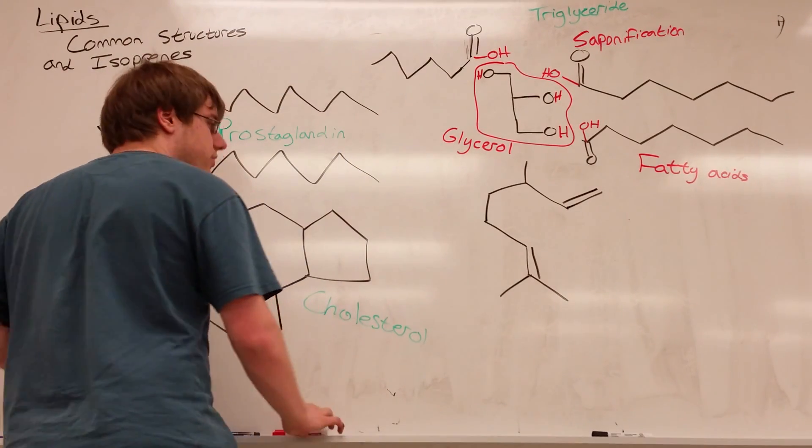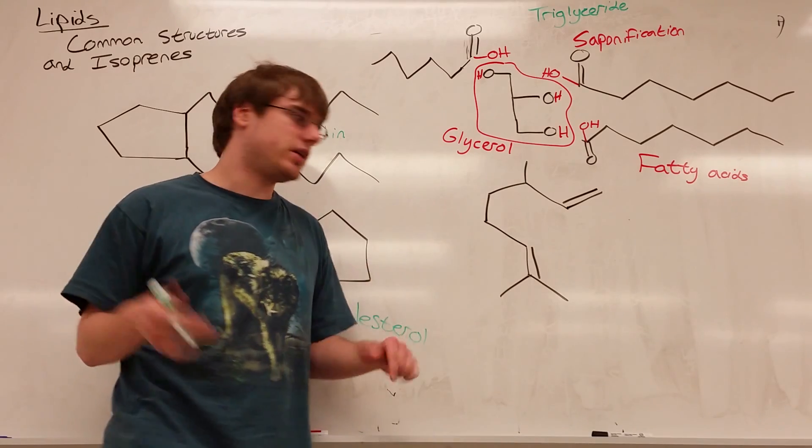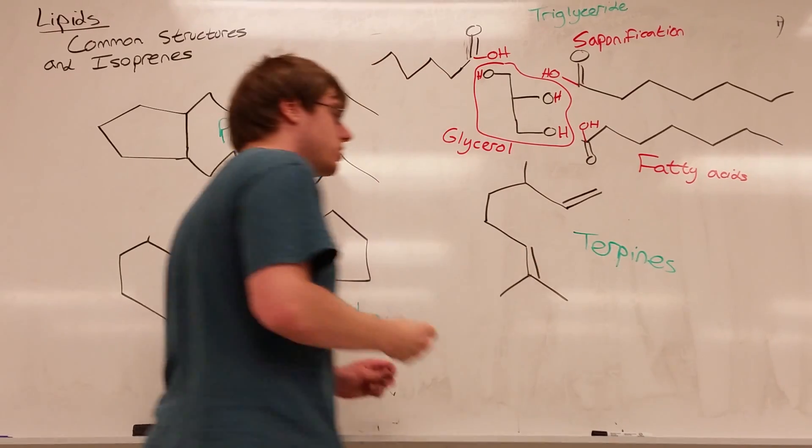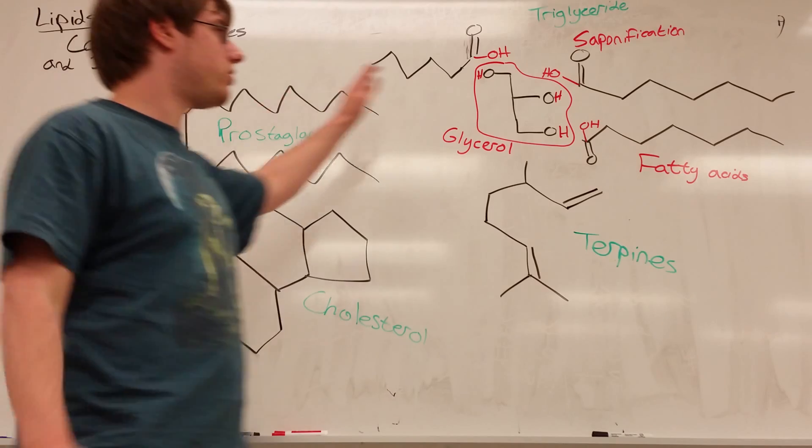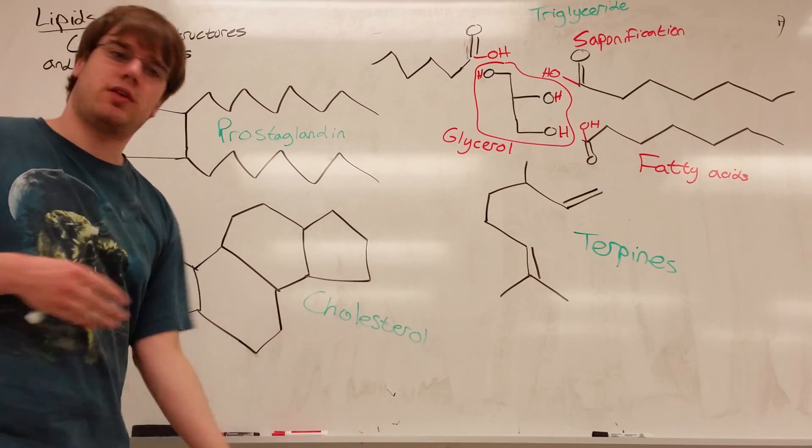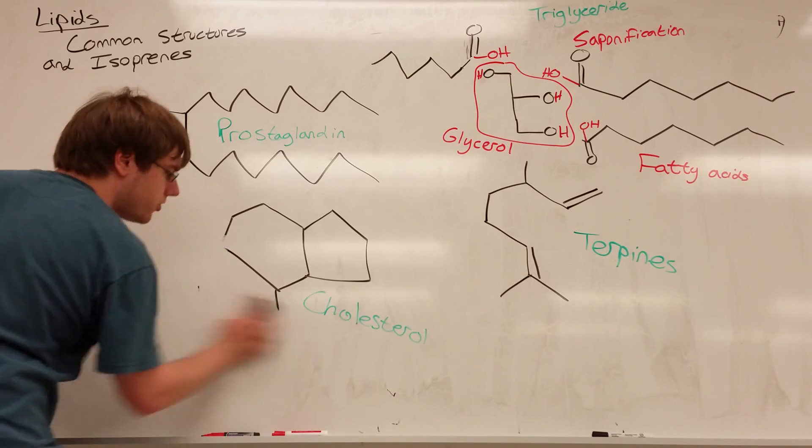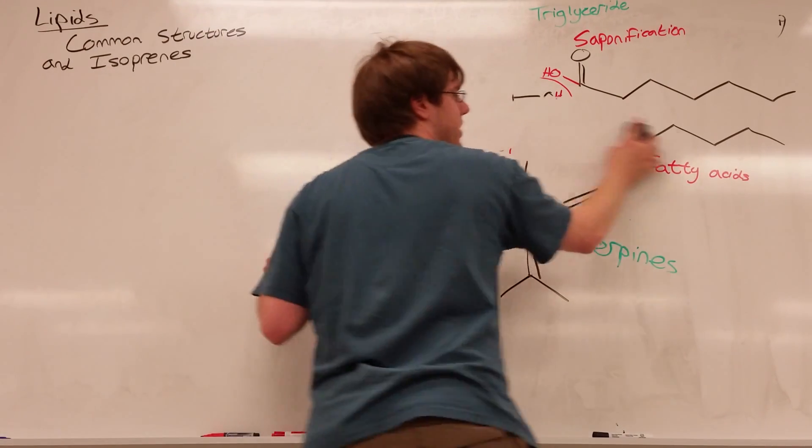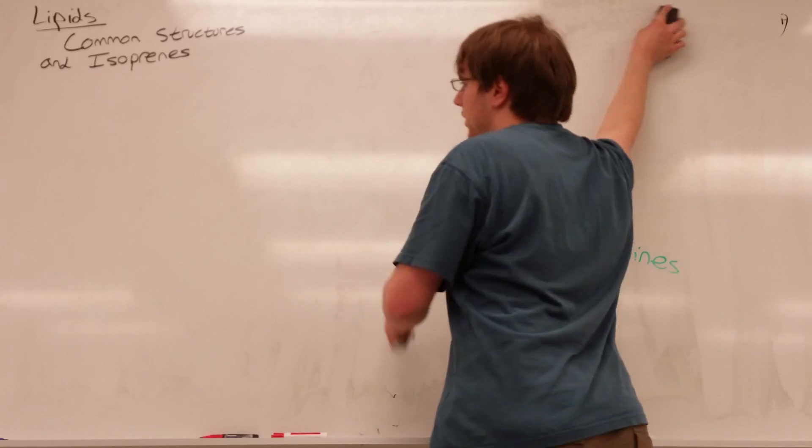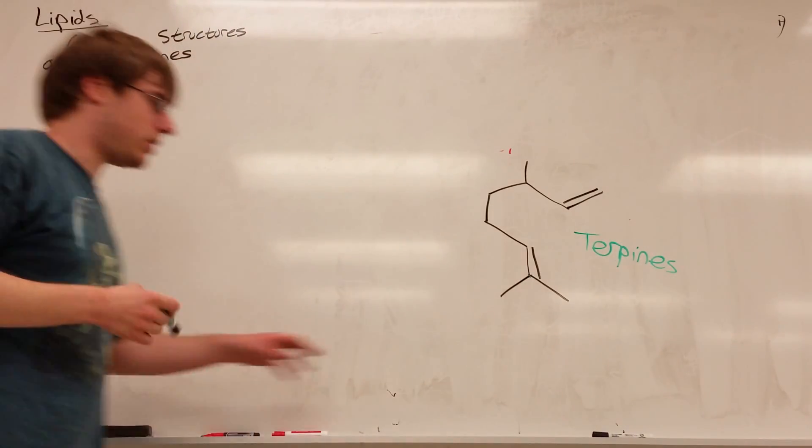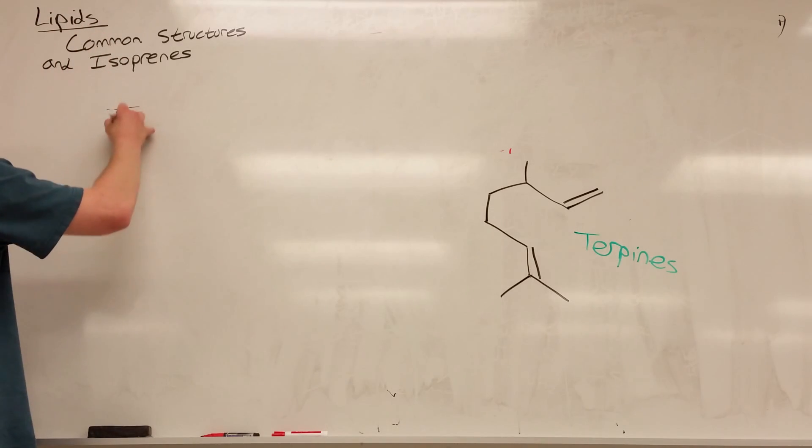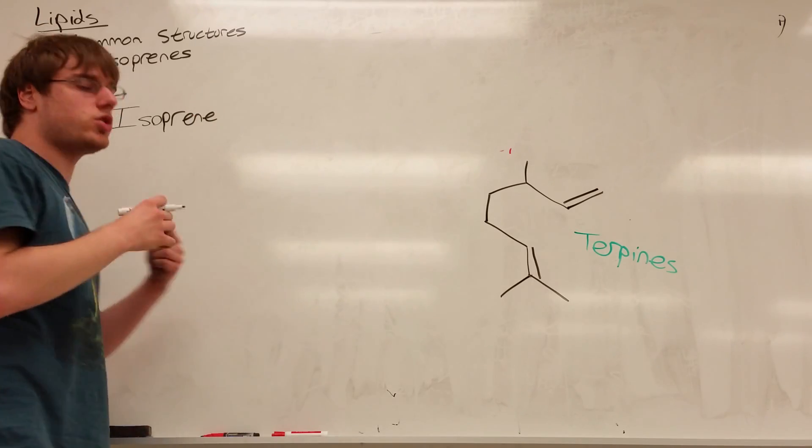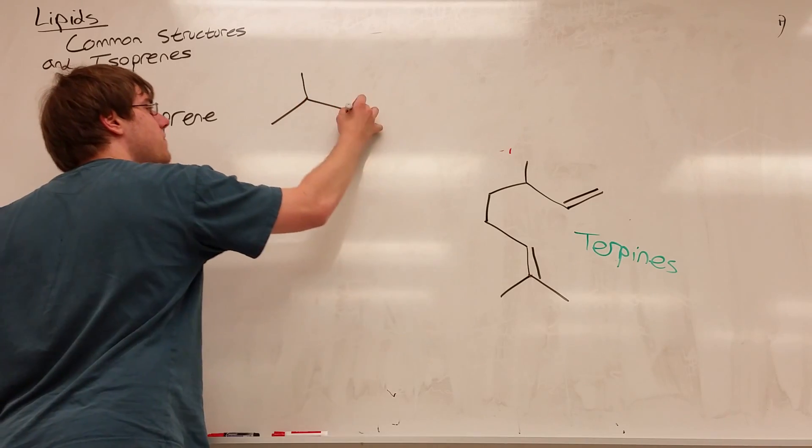The final structure that's derivative of things that we need to talk about, and the one that we go into the most detail in lipids consistently, are things that are derivative of terpenes. Now terpenes fall into a special category because with prostaglandins, cholesterols, and fatty acids, there's not much we can really ask you about aside from identifying what kind of structure these are. But terpenes actually have a couple rules. The most common rule that they will ask about is something called the isoprene rule or the isoprenoid rule.